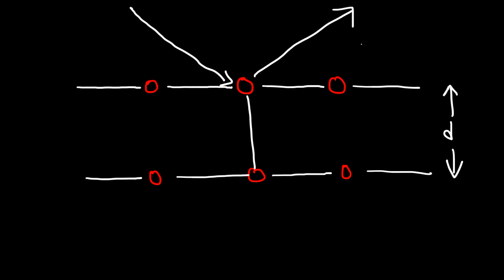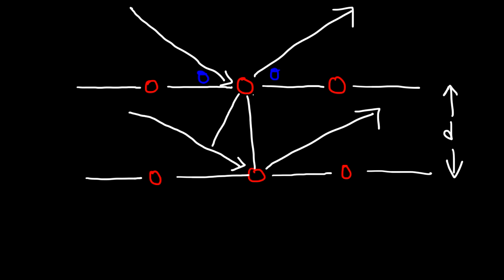We're going to pass the first x-ray on this atom, and then it's going to bounce off at the same angle. And then we're going to have another x-ray coming at the same angle, striking the atom below it. We're going to call this angle theta. And let's turn this into a right triangle. The hypotenuse of this right triangle is d, the interspacing distance between the layers of atoms.